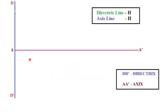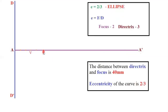First step: draw a directrix line, then approximately at half of it draw the axis line. Directrix is DD' and axis is AA' — both lines should be drawn with H pencil. The next step is to fix the focus. The distance between directrix and focus is 50 mm. The eccentricity ratio is 2/3, which is the distance from focus divided by distance from the directrix.